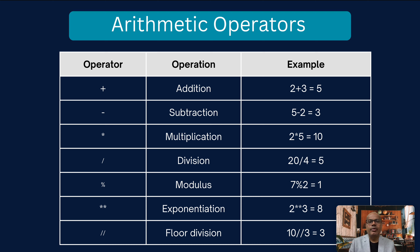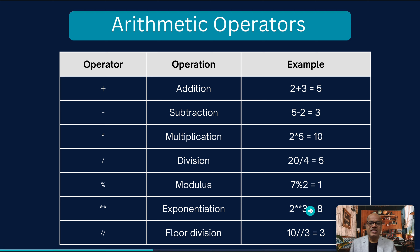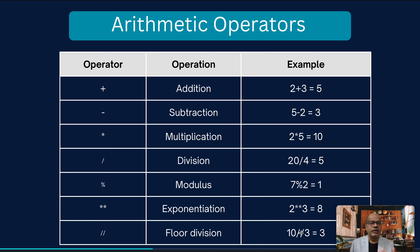The first type is arithmetic operators: plus, minus, multiplication, division, modulus, exponential, and floor division. For example, 2 + 3 = 5. Modulus gives you the remainder when dividing. Exponentiation — using double star — means 2 ** 3 returns 8. Floor division returns only the integer part, discarding the decimal.